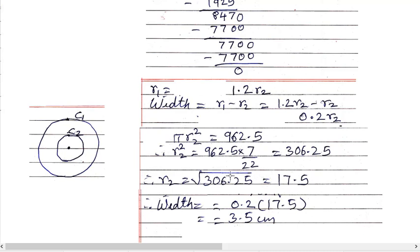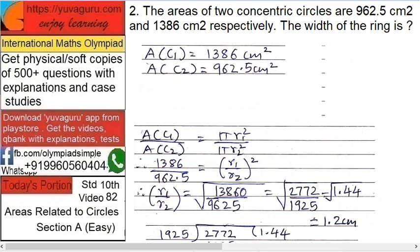R2 is what? Area of circle, second circle C2, is 962.5. So π R² equals 962.5. So R² equals 962.5 times 7 upon 22. Do it: 306.25.